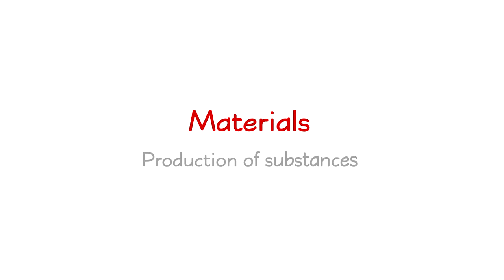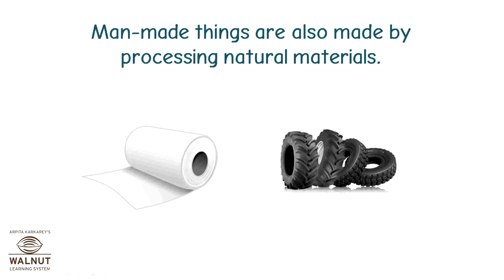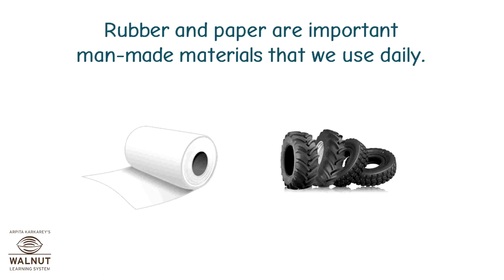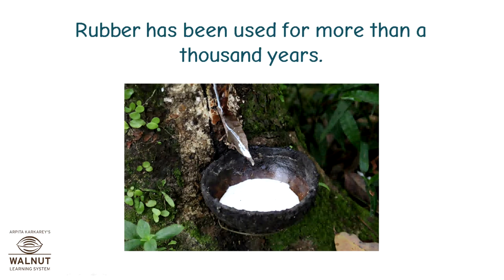Materials are the production of substances we use. Materials can be both natural and man-made. Man-made things are also made by processing natural materials. Rubber and paper are important man-made materials that we use daily. Things made of rubber include elastic bands, car tires, erasers, stamps, hoses, and so many more things. Rubber has been used for more than a thousand years.